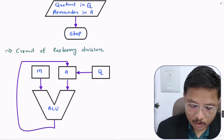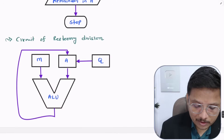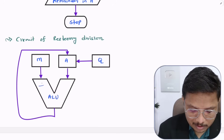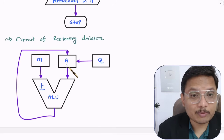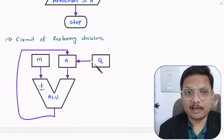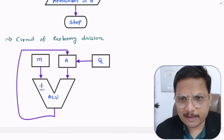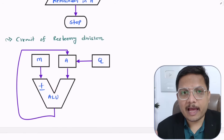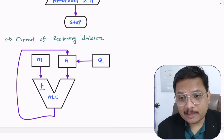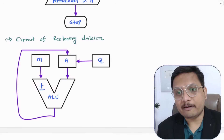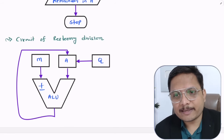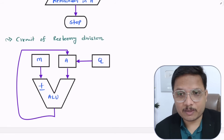This is how the flowchart works. If you observe the circuit, the ALU performs addition and subtraction of M with the accumulator, and the accumulator and Q are shifted using a shift register. This process repeats N number of times. That is how we have the circuit, flowchart, and example. I hope it is clear — if you have anything to share, please note it in the comment box, as I always read my students' comments. Thank you for watching.